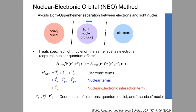So in the NEO method, we avoid Born-Oppenheimer separation between electrons and light nuclei such as protons. As you can see in this schematic picture, we're moving this Born-Oppenheimer separation bar from separating electrons and nuclei to separating heavy nuclei from electrons plus light nuclei such as protons. We're treating specified light nuclei on the same level as electrons. This helps capture nuclear quantum effects for the light nuclei we're treating quantum mechanically. The new Hamiltonian can be separated into three terms: conventional electronic terms, analogous nuclear terms shown in blue, and additional nuclear-electronic interaction terms.